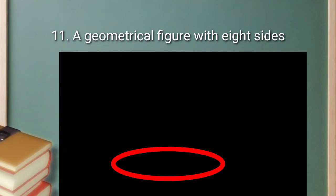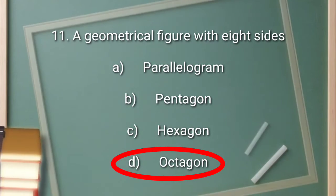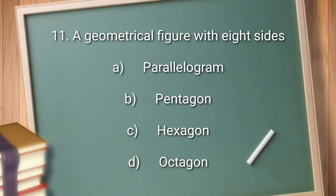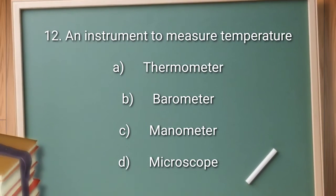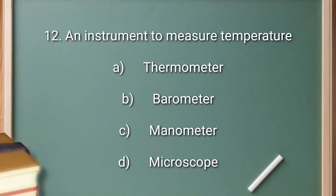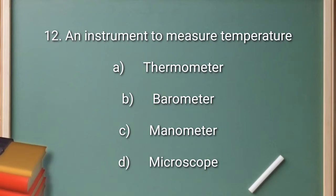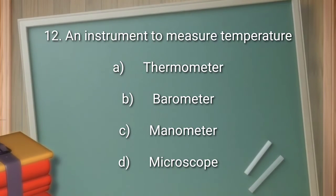The right answer is option D: octagon. Question number 12: an instrument to measure temperature. Option A: thermometer. Option B: barometer. Option C: manometer. Option D: microscope.